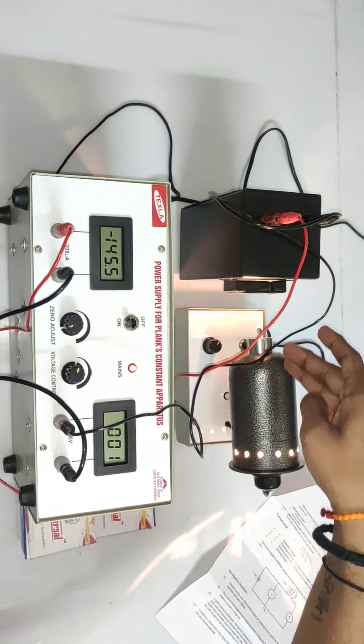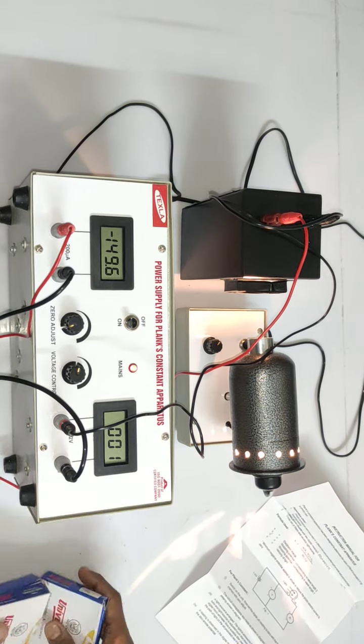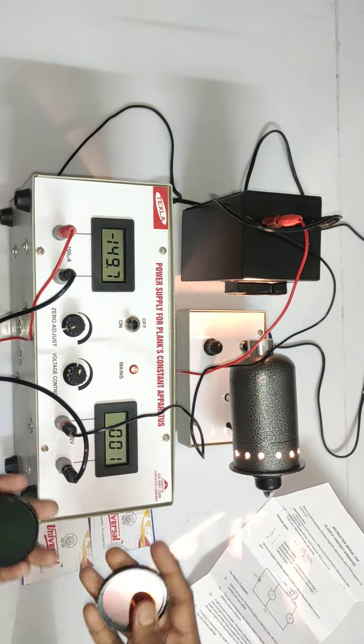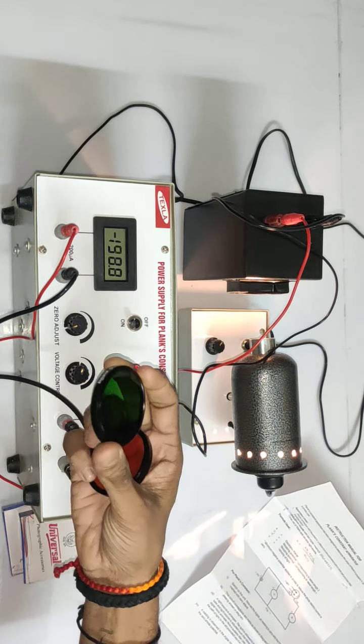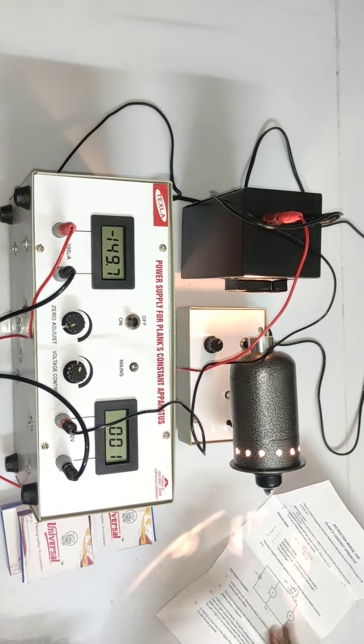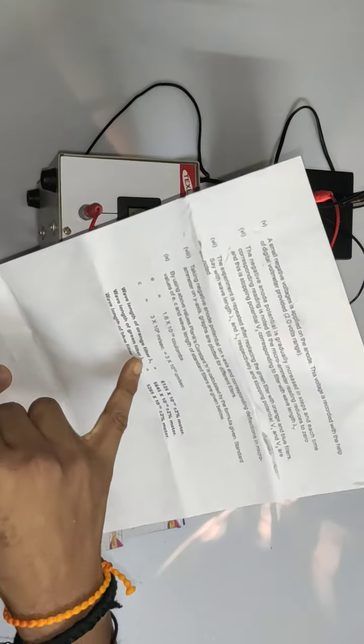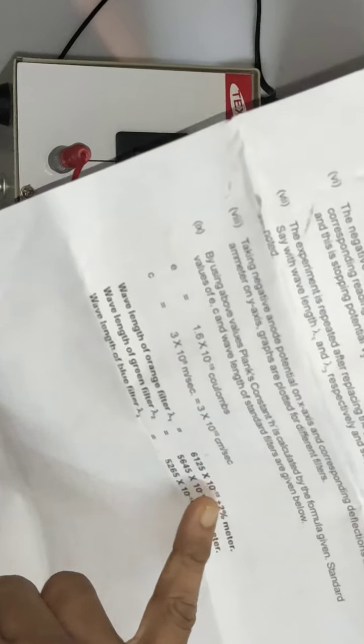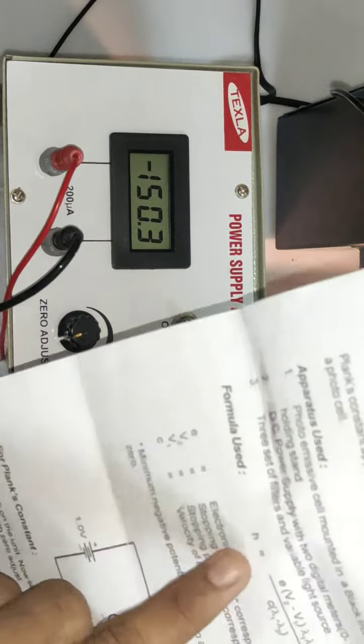Three filters are provided: orange, green, and blue. Their wavelengths are already noted in the manual. Let's call orange lambda 1, green lambda 2, and blue lambda 3. Their wavelengths are already given.